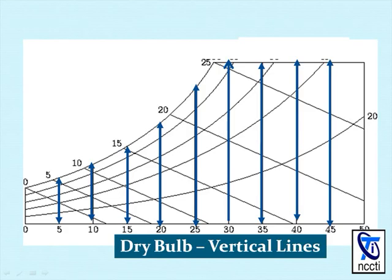Dry bulb is represented by the vertical lines. The values are on the bottom of the chart.